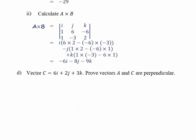Part D. Given vector C equals 6I plus 2J plus 3K, prove the vectors are perpendicular. To do this, we're going to take the vector dot product of A and C. So, we're going to get 1 times 6 plus 6 times 2 minus 6 times 3. And that evaluates to zero.